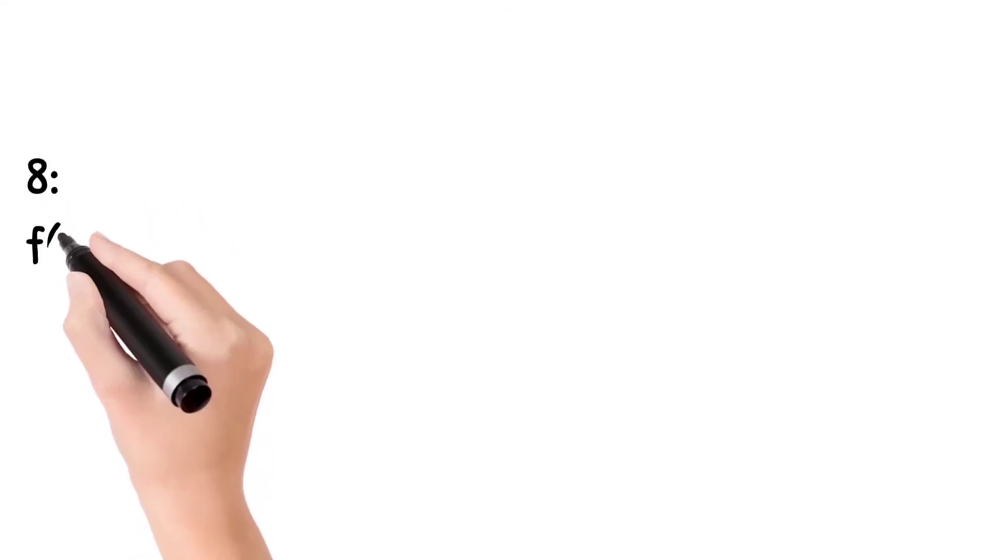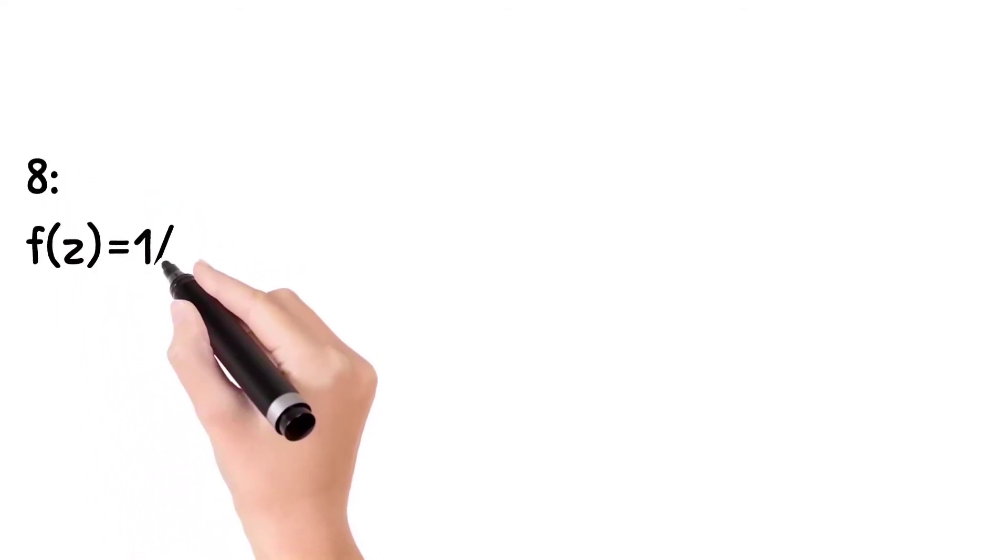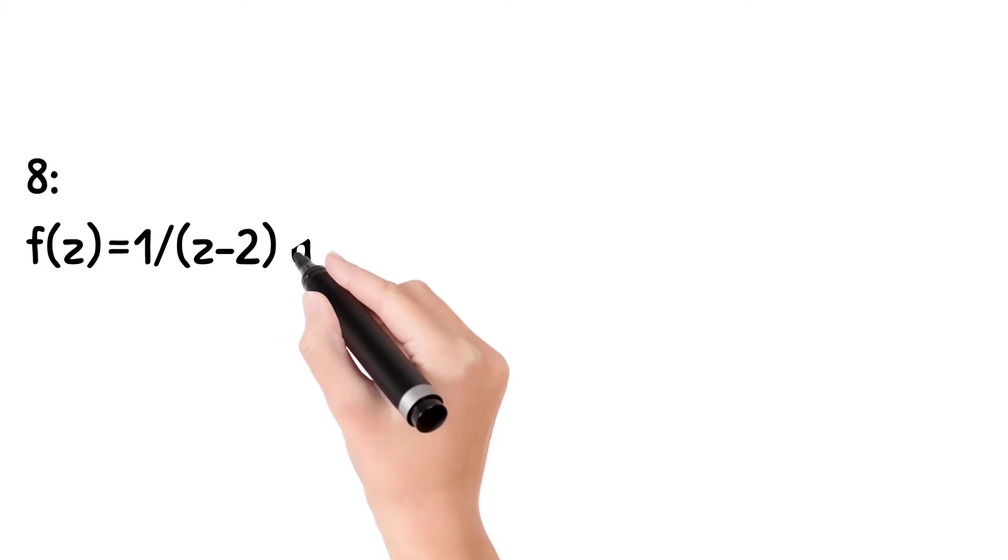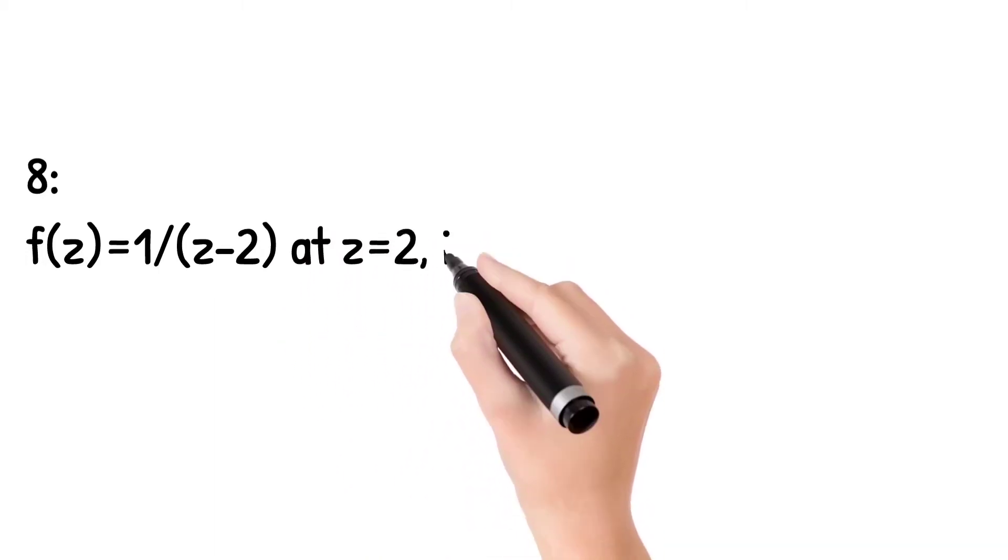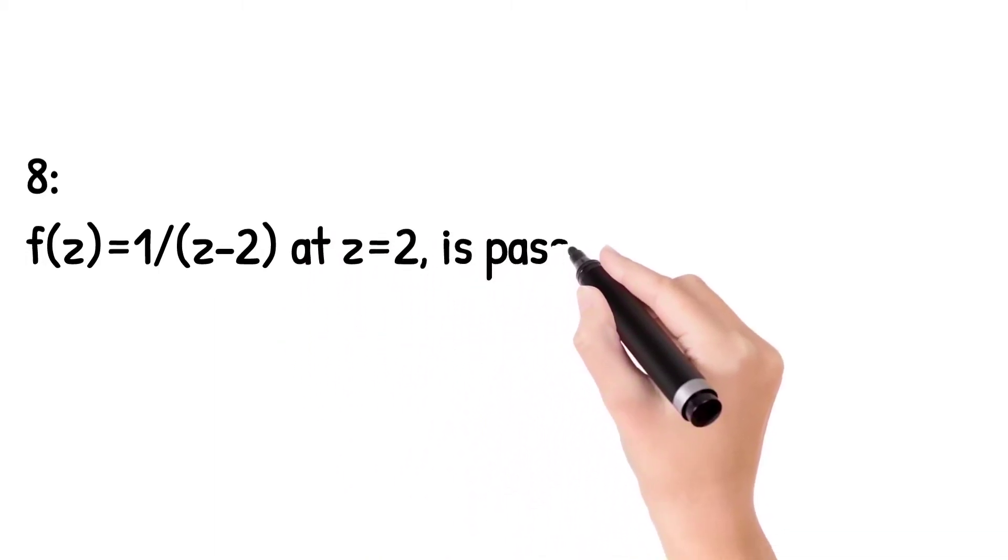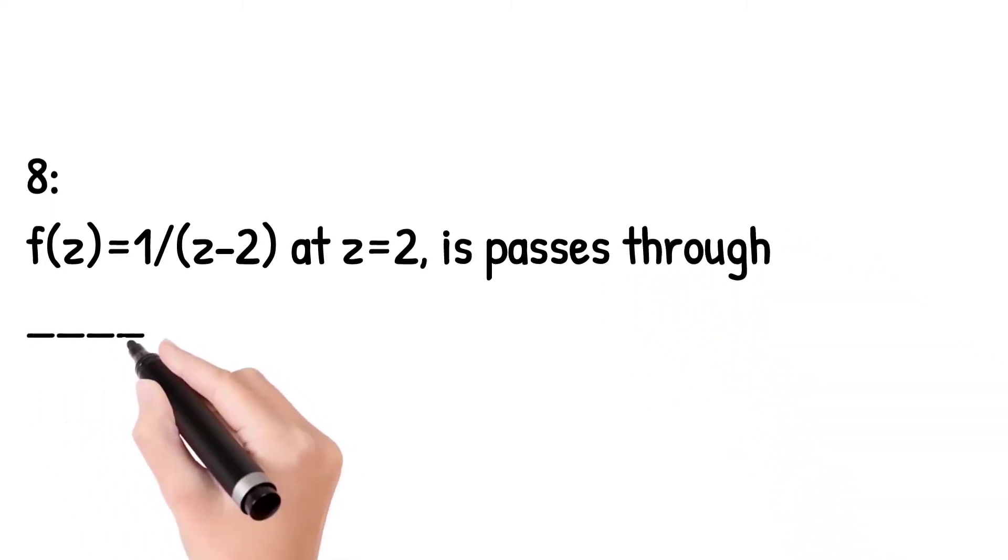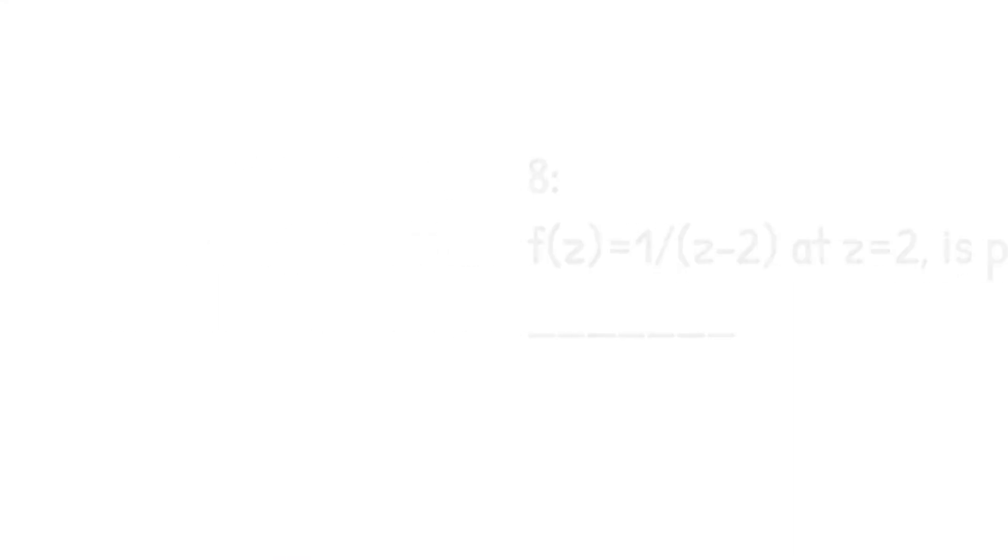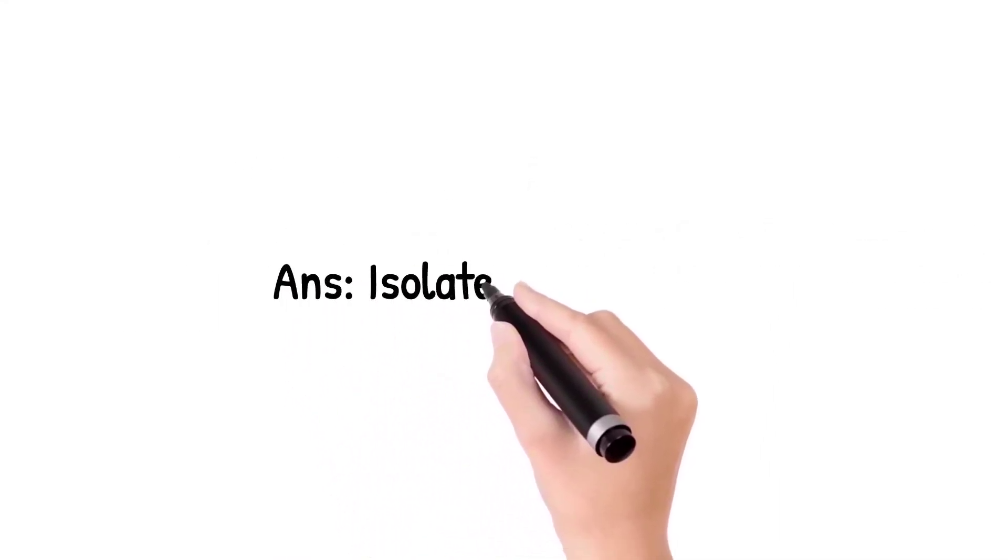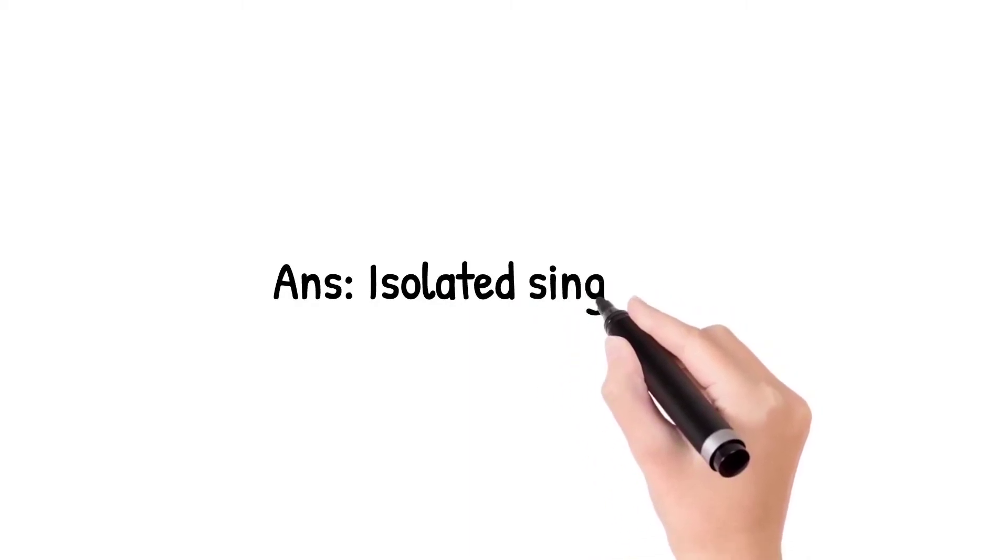Question number 8: If the function is equal to 1 over z minus 2 at z equals to 2 passes through? Answer is isolated singularity.